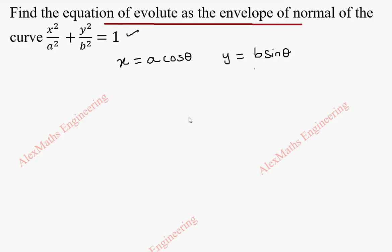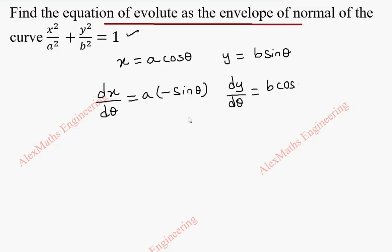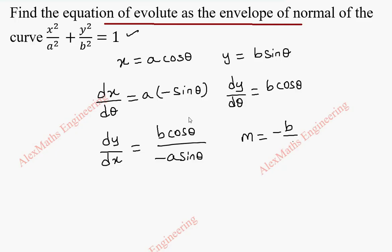We can use either the standard form or the parametric form. Using the parametric form is easier. So let's find dx by d theta, which is a into minus sine theta, and dy by d theta will be b into cos theta. By dividing, we get dy by dx, which is b cos theta by minus a sine theta. So this is our m, that is minus b by a into cos theta by sine theta.